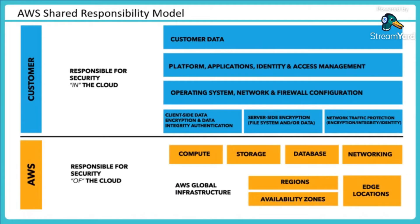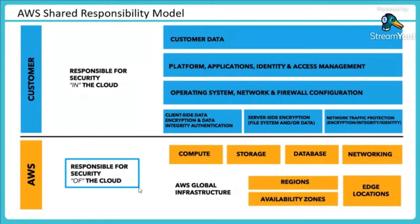Now let me go into the actual content. AWS is responsible for managing the security of the cloud. What does that mean? The physical infrastructure, the zones where your data is stored, the locations where data centers are running — AWS takes care of securing all of that. Physical security is AWS's responsibility. We go through rigorous processes and follow compliance policies to ensure the best possible security in our data centers.